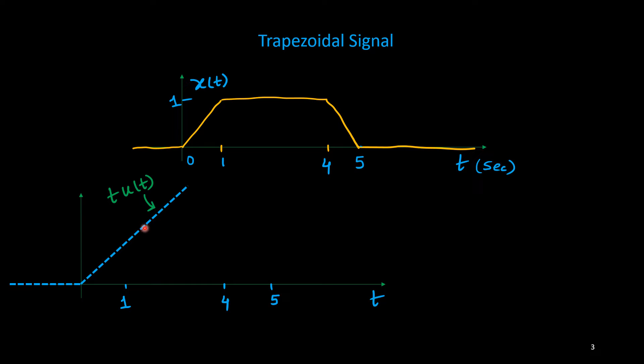But it will continue till infinity, but here up to 1 only it will remain there and beyond that it should be straight line. So to get this, the signal will imply that its slope is 0, so I need to put one ramp signal here to cancel this increment.